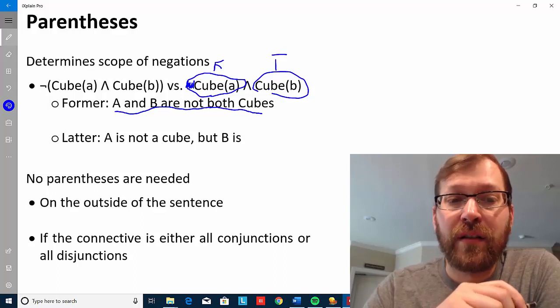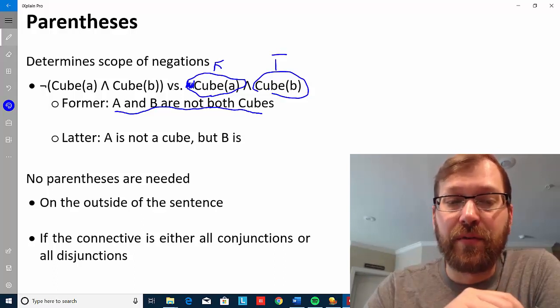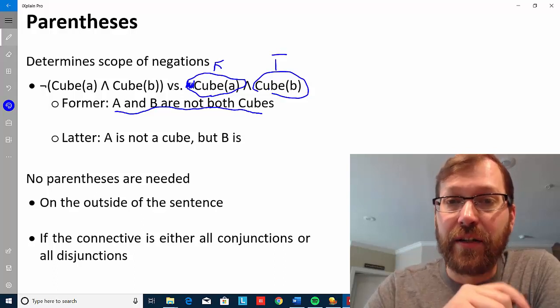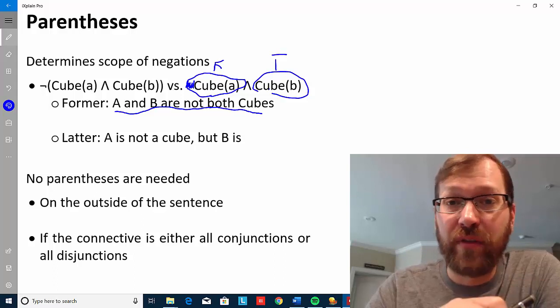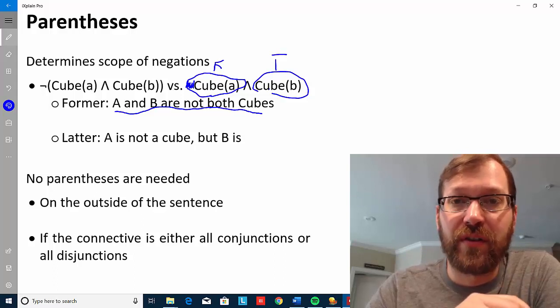But the latter, in order for it to be true, it's got to be that A isn't a cube and B is a cube. And that's the only case in which the latter one turns out to be true.